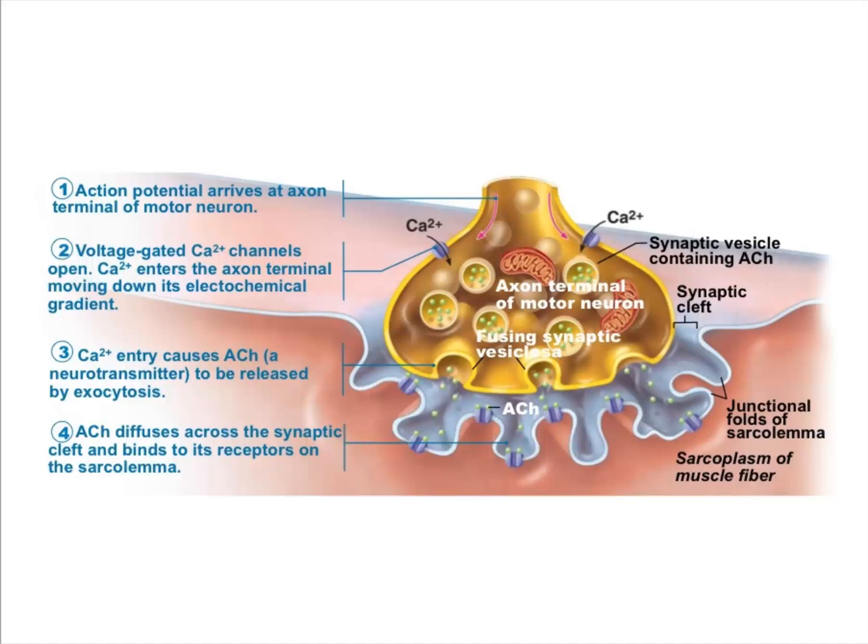I'm going to go through them one by one to make sure we understand what's going on. The first step is that we have to have an action potential coming down a motor neuron.